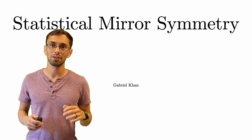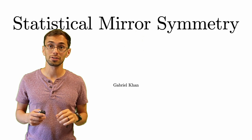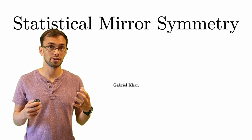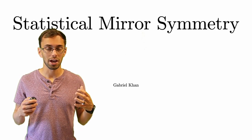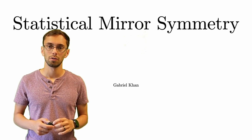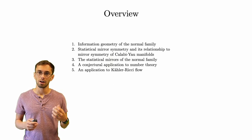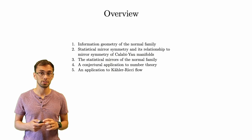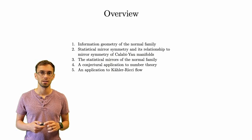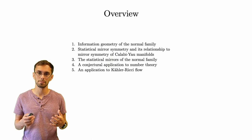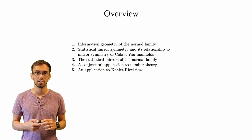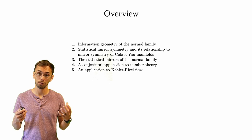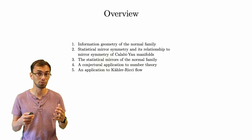Statistical mirror symmetry is a duality between two geometric structures on the tangent bundle of certain statistical manifolds. The goal of this talk is to give an introduction to the subject, focusing on a particularly important example which comes from the family of normal distributions. For an overview, I'll start with background on information geometry and the family of normal distributions, then show the construction of statistical mirror symmetry and discuss how this relates to mirror symmetry of Calabi-Yau manifolds. Then I'll discuss the spaces which show up when we apply statistical mirror symmetry to normal distributions.